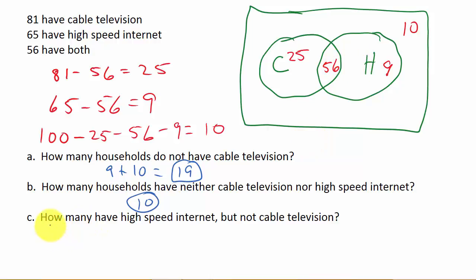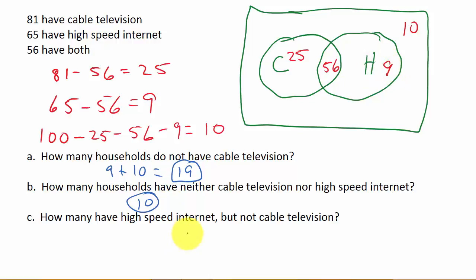How many have high-speed internet but not cable television? All of the internet circle has high-speed internet, but these 56 also have cable television — it's just these 9 that have high-speed internet but not cable television. Another way they might ask this: how many have high-speed internet only? The answer is 9.